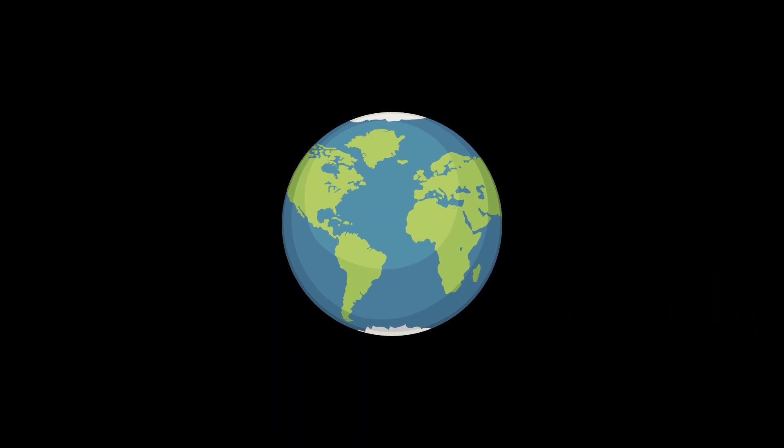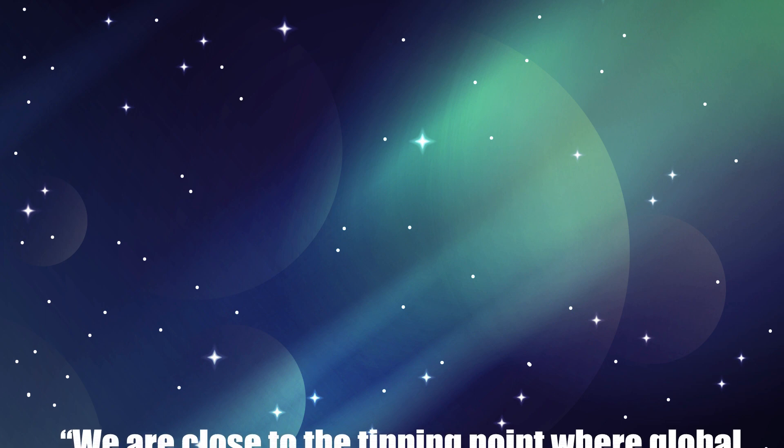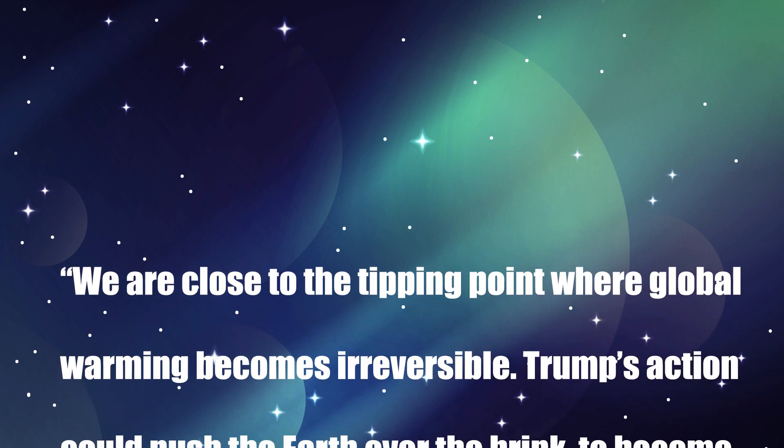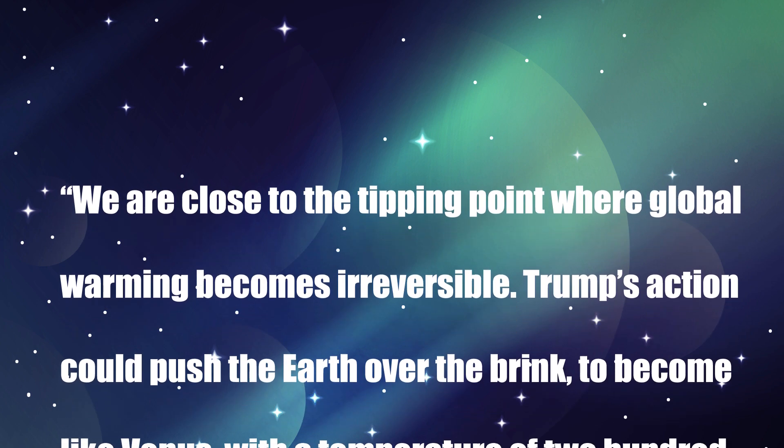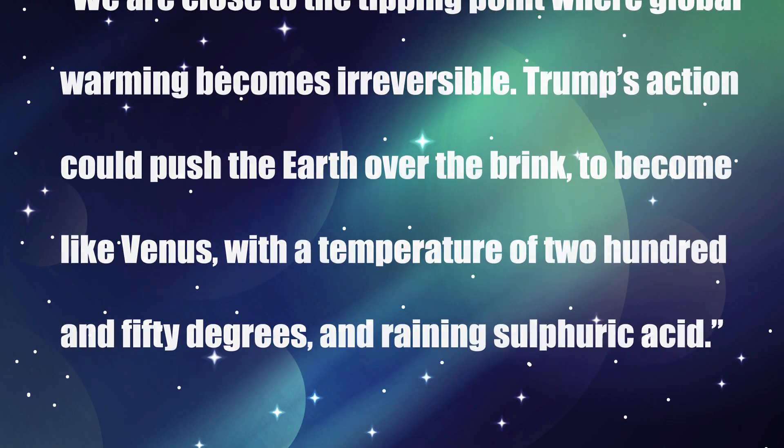After President Trump pulled out of the Paris Climate Agreement, Stephen Hawking once said, we are close to the tipping point where global warming becomes irreversible. Trump's action could push the Earth over the brink, to become like Venus, with a temperature of 250 degrees and raining sulfuric acid.